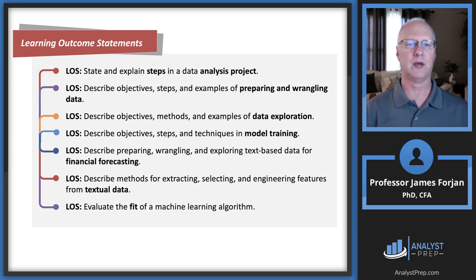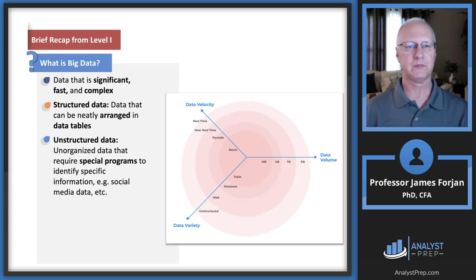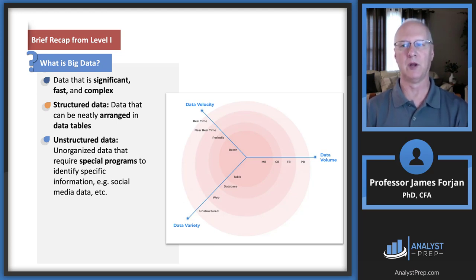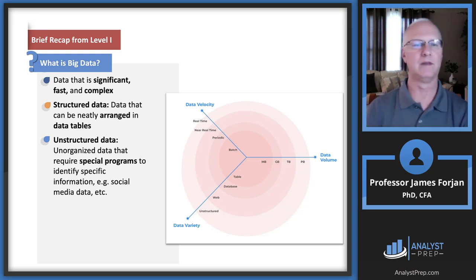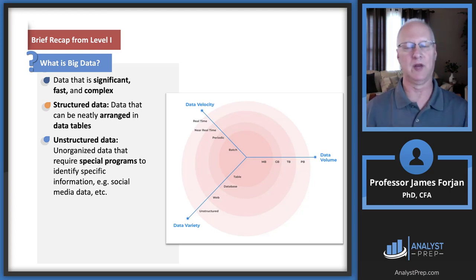Looking at these first four learning outcome statements — preparing and wrangling, data exploration, model training — we're trying to figure out: is this model credible and is it reliable? You should remember from Level 1 that there are two types of data. Structured data can be arranged neatly in a data table — think of a big Excel spreadsheet with things like operating cash flow, free cash flow, size of the dividend, expenses. Unstructured data is a whole bunch of stuff that you need a special program to force into columns and rows. A classic example is social media, and we'll talk about that as we go through this slide deck.